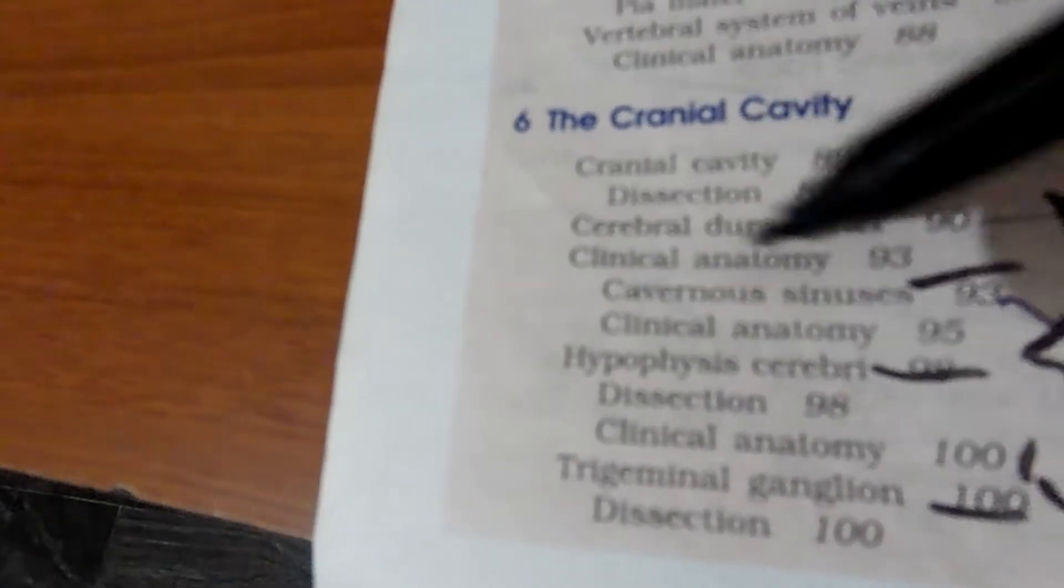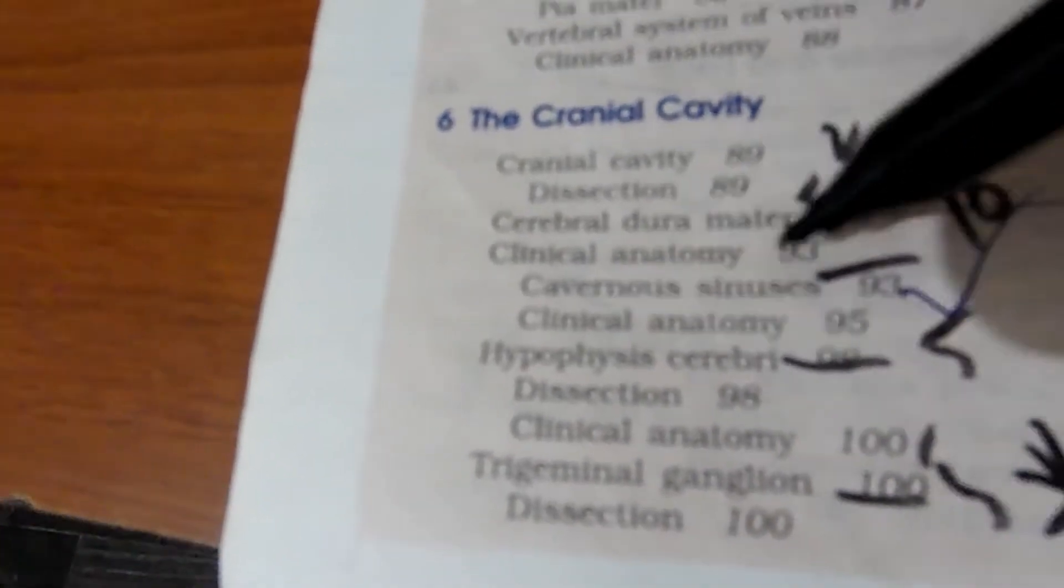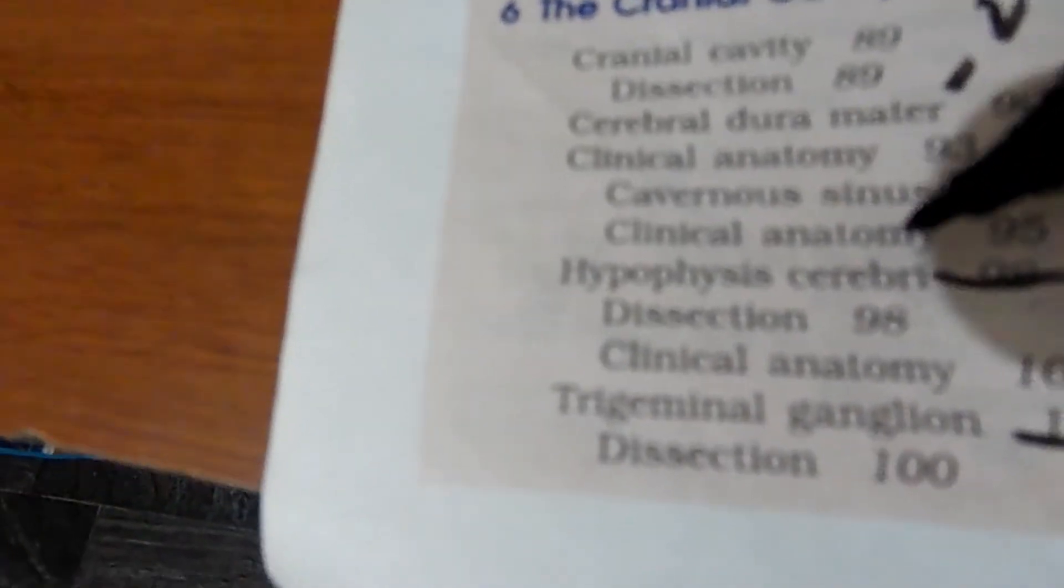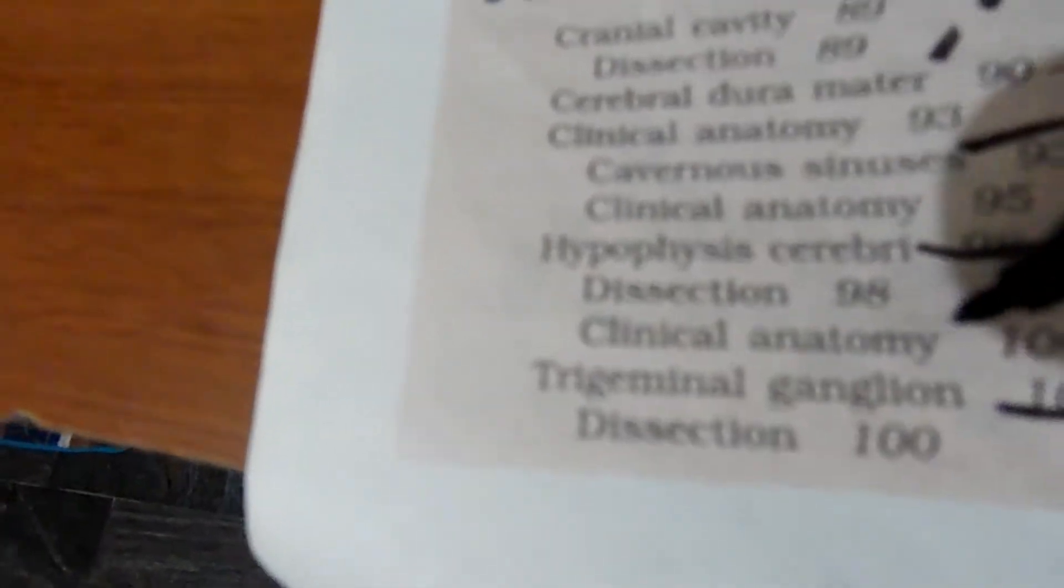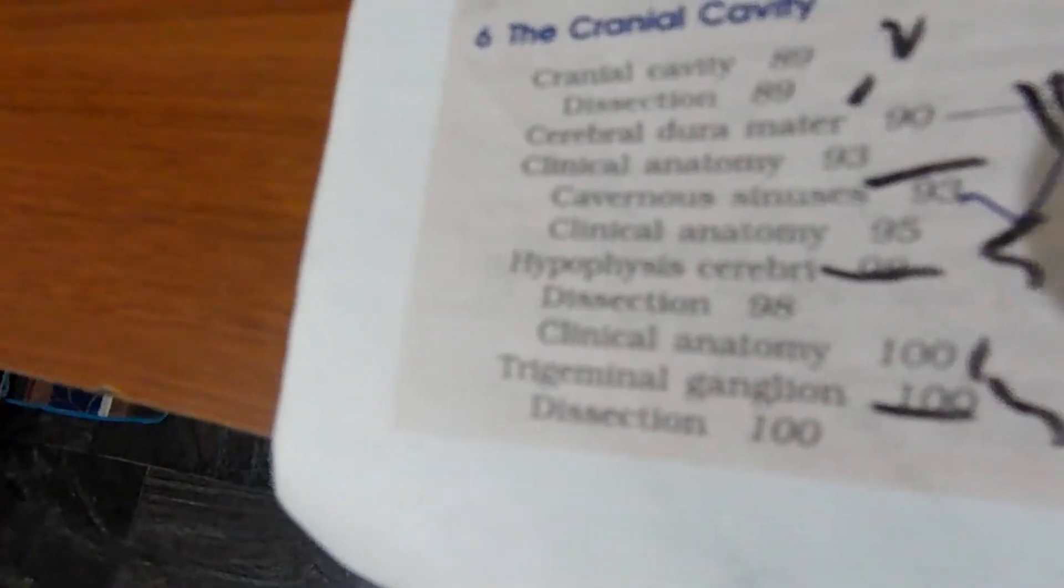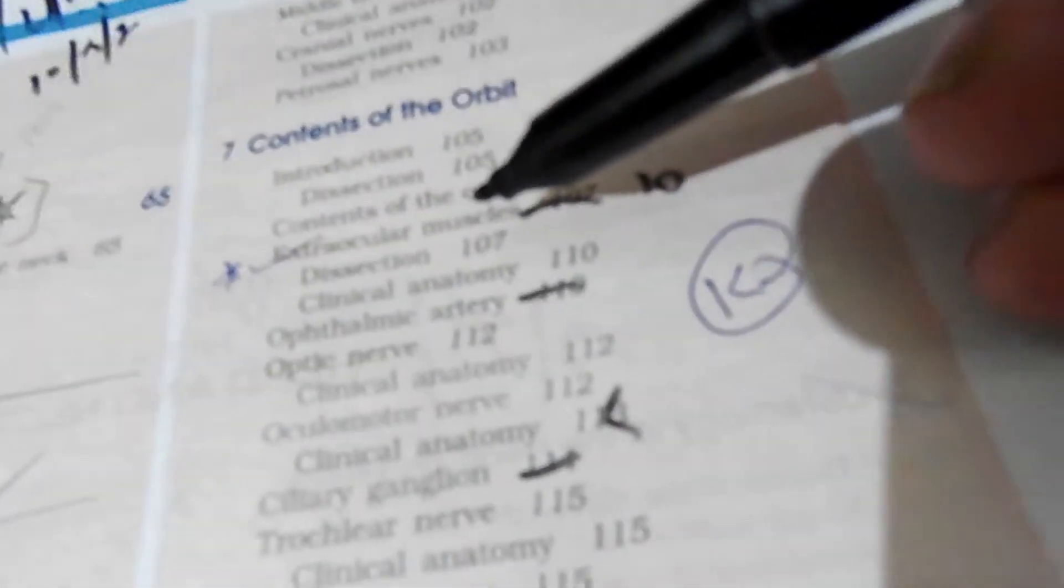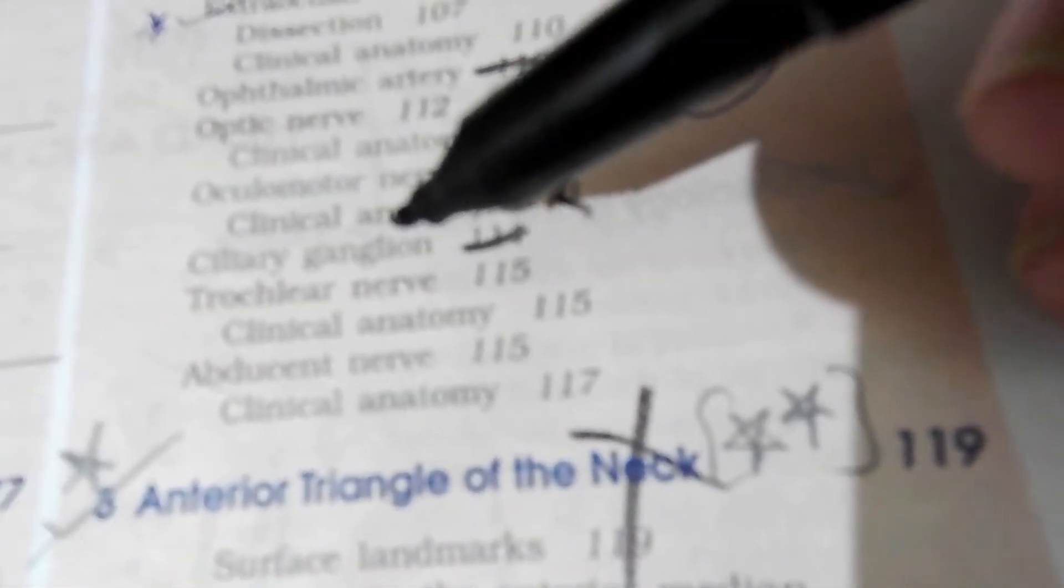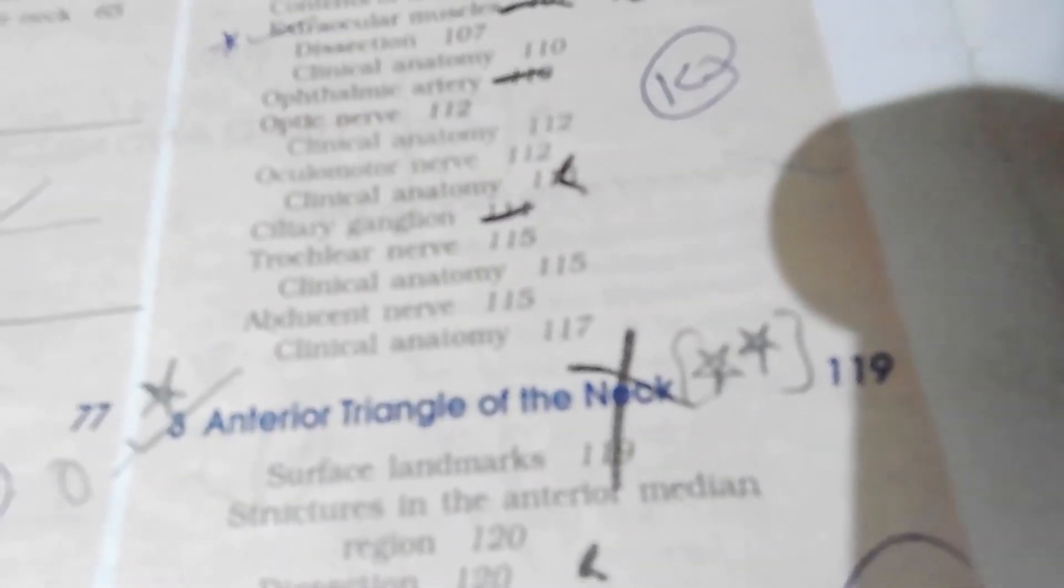In the sixth chapter, please by heart in detail cavernous sinus for ten marks, hypophysis for five, trigeminal ganglion for five. The seventh chapter is extraocular muscles, ten marks, maybe ciliary ganglion. Don't read any other things because you have neuroanatomy.